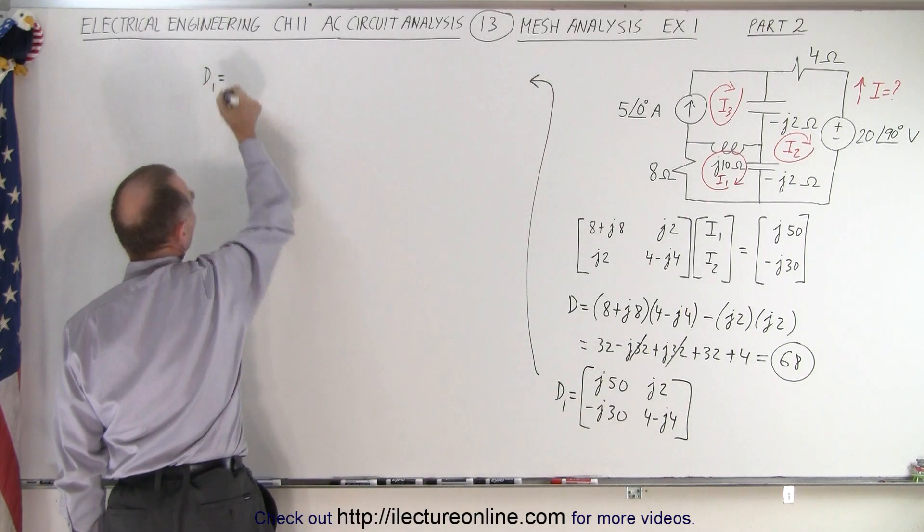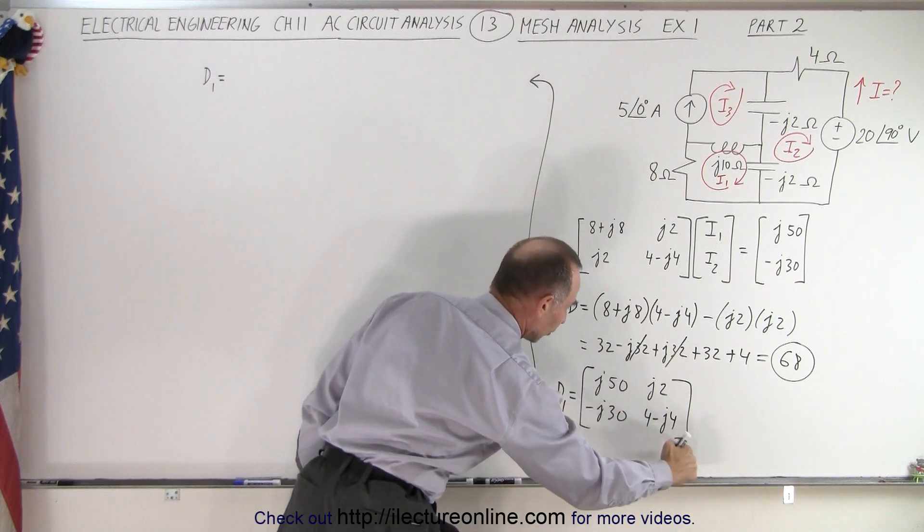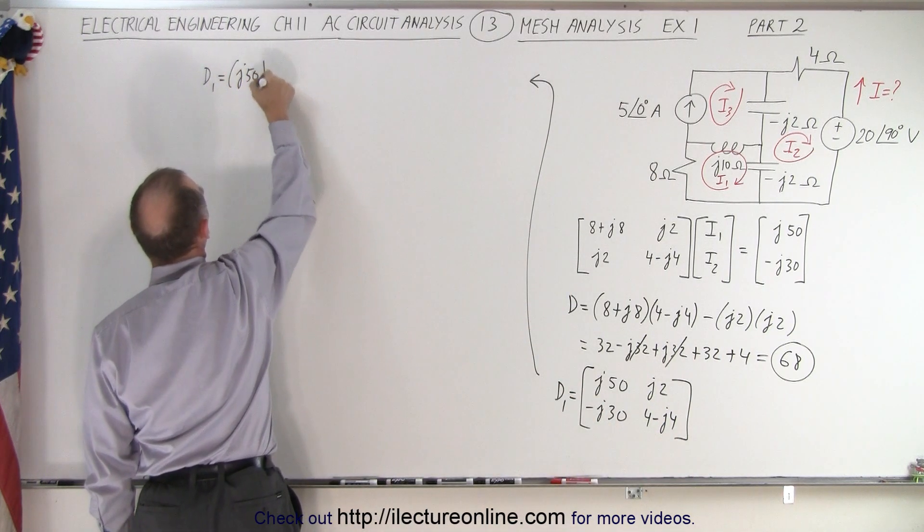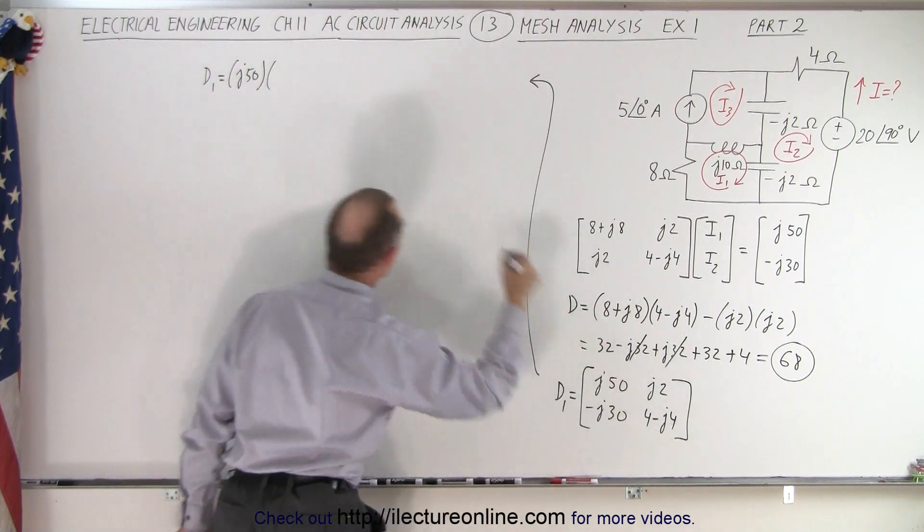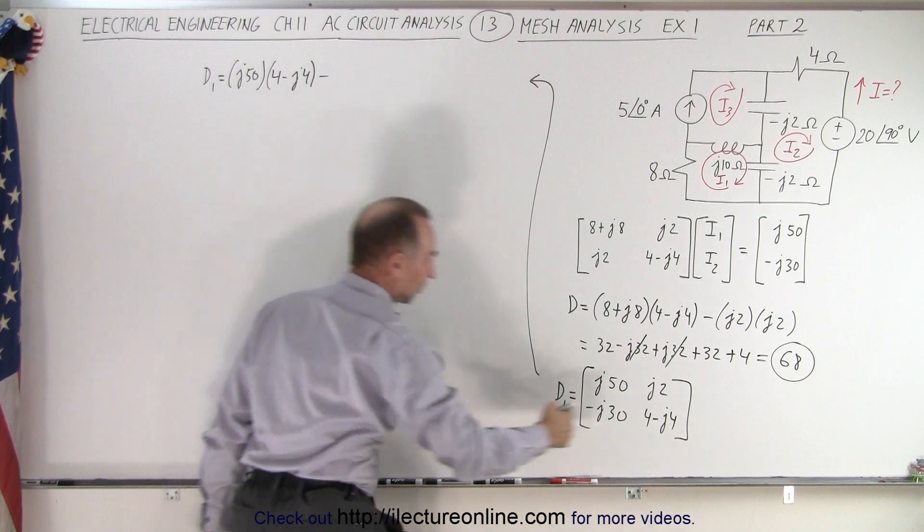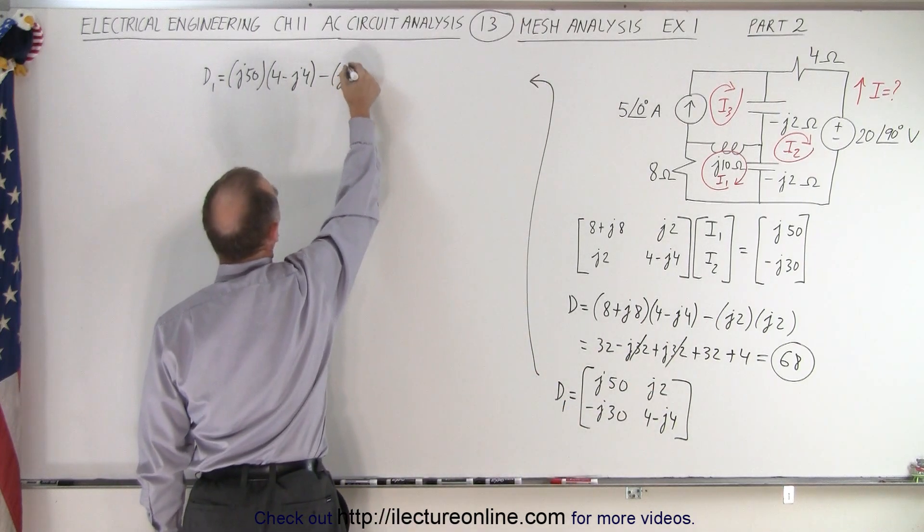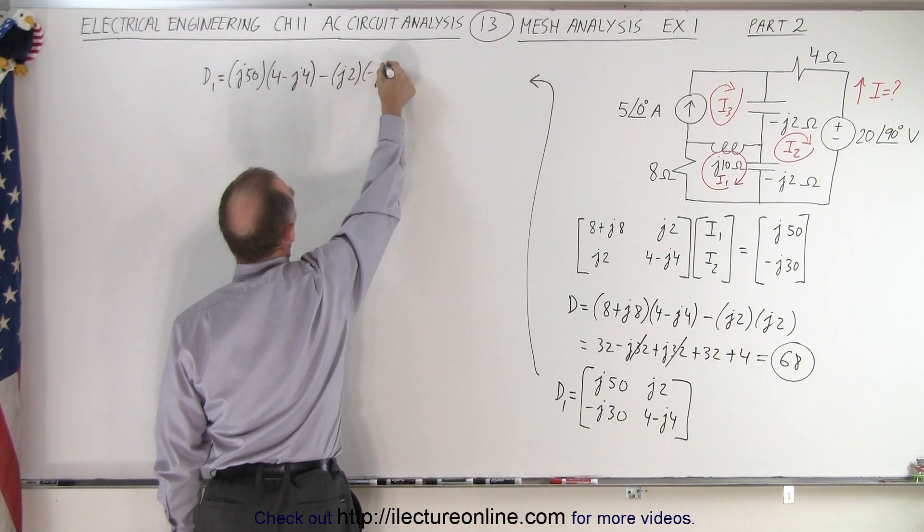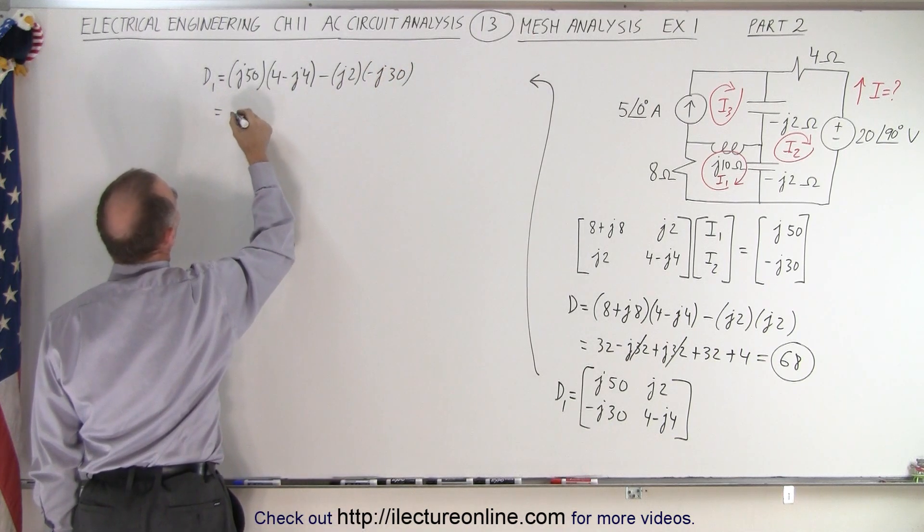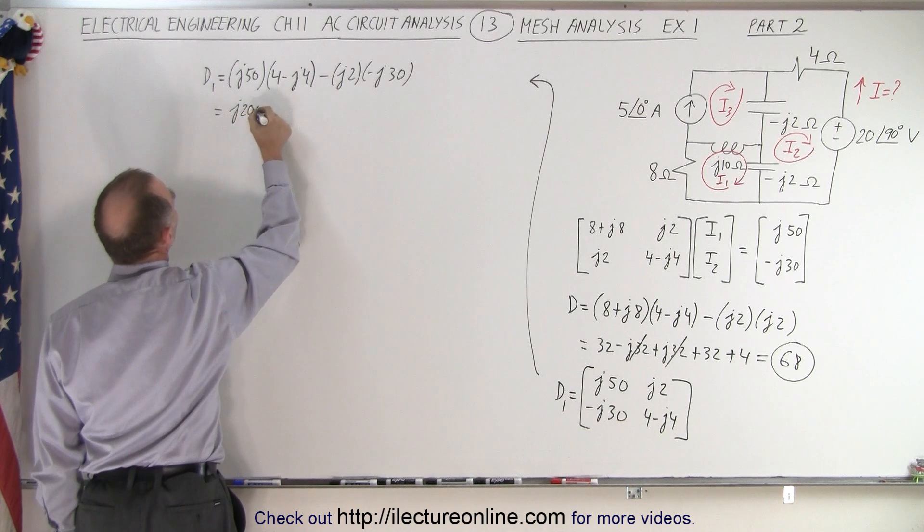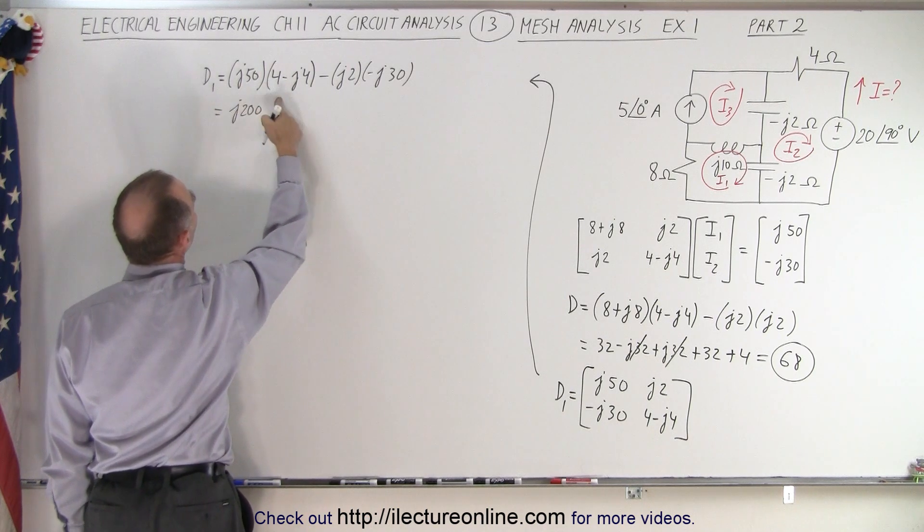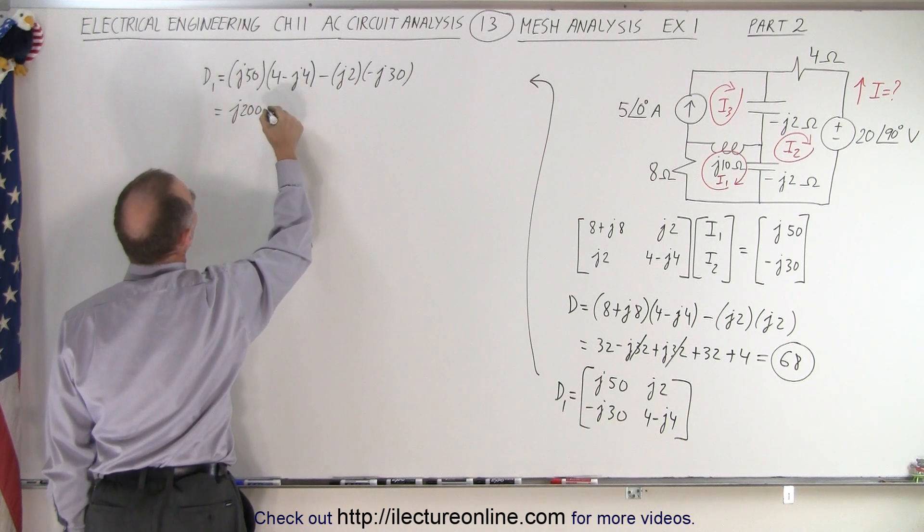So we end up with d1 is equal to the product of those two cross terms. So that would be equal to j50 multiply times 4 minus j4 minus the product of those two terms, which is j2 times a minus j30. Okay, multiplying these out, we get j200. This times this gives you minus j squared, that's a plus 1, times 5 times 4, which is plus 200.